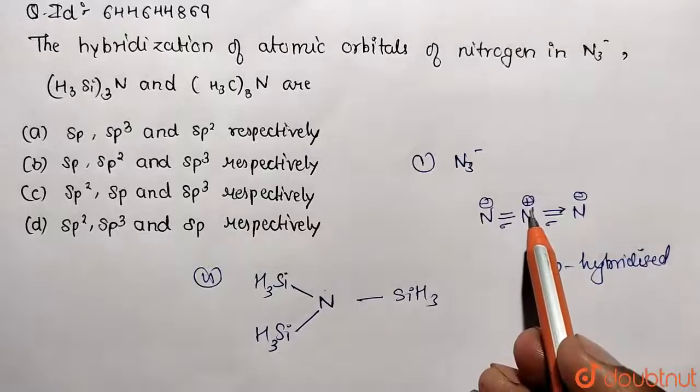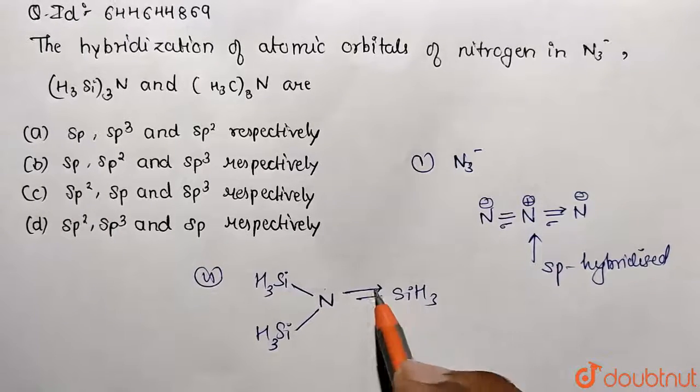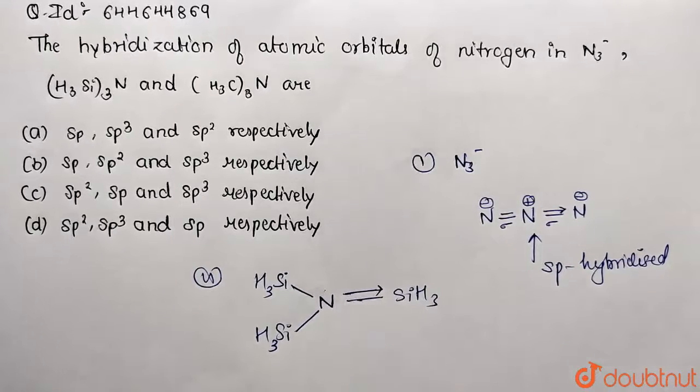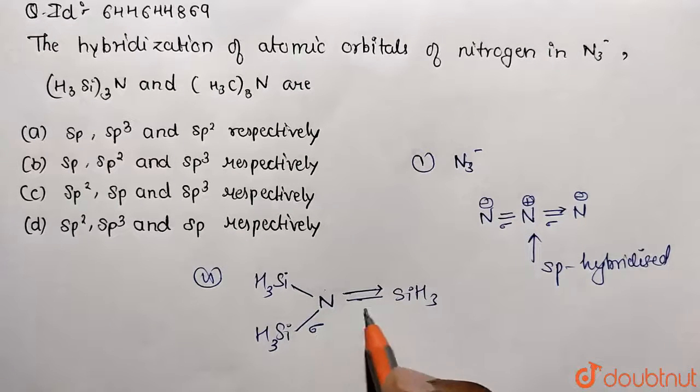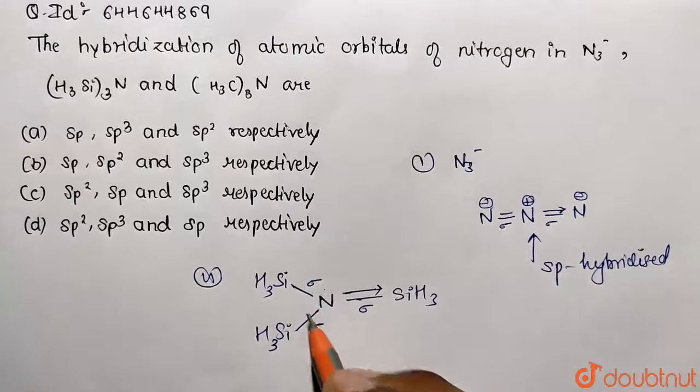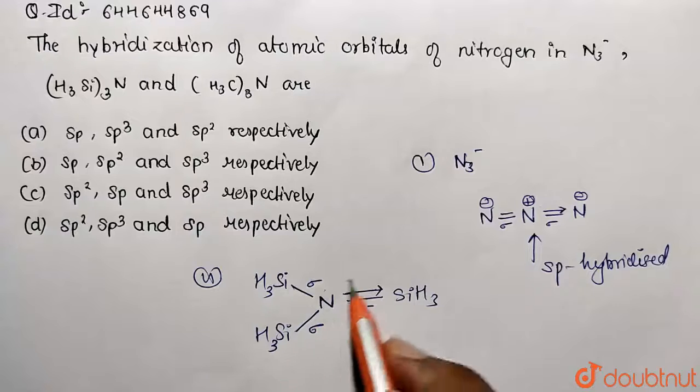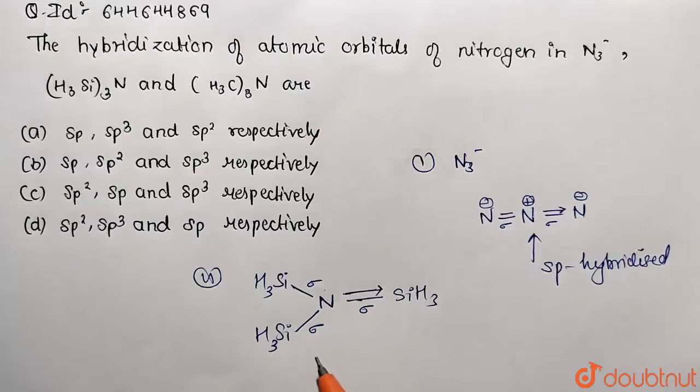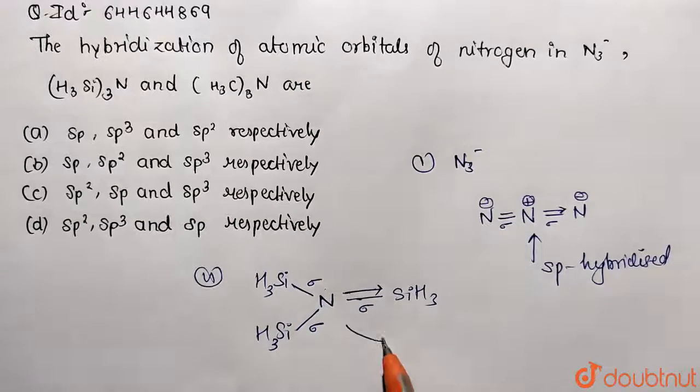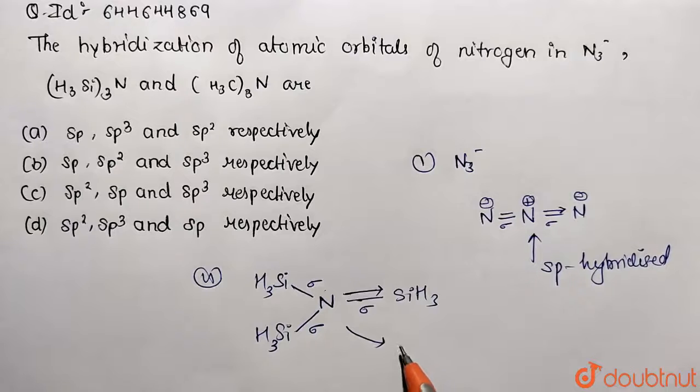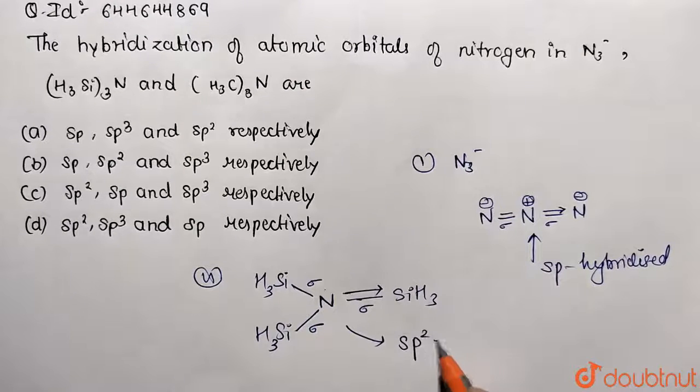Now nitrogen is having one lone pair as we have talked over here, so this is correspondingly making a coordinate bond this side. Now to calculate the hybridization, you need to count the number of sigma bonds. So this is first sigma, here also sigma first, here also one sigma. So total sigma bonds present are three, that means we need three orbital space for this. So total hybridization is going to be requiring three orbital space, so it's going to be sp2 hybridized.